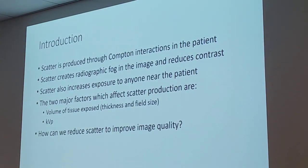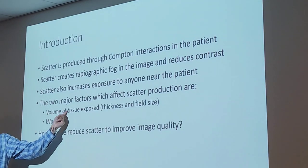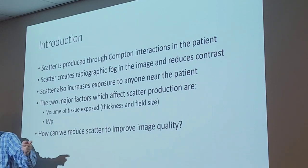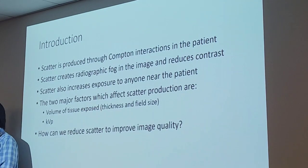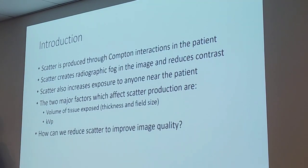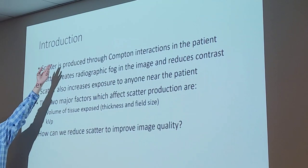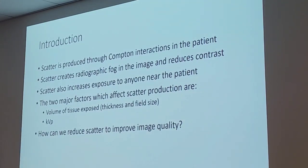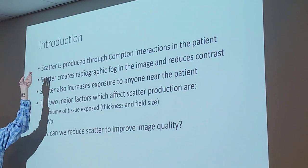We have two major factors which affect scattering. Number one is volume of tissue — how much tissue was exposed. Thickness matters: the more tissue the x-rays have to pass through, the more interactions occur. Or field size — how big your light field is. If your light field is bigger and you're exposing more tissue, once again more tissue means more Compton interactions.